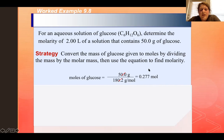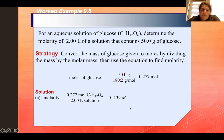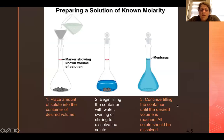Now we take those 0.277 moles of glucose and convert to molarity using the equation: molarity equals moles divided by liters. We have 0.277 moles divided by 2 liters, which equals roughly 0.14 M. Notice that molar is abbreviated with a capital M.